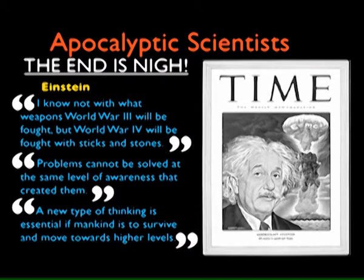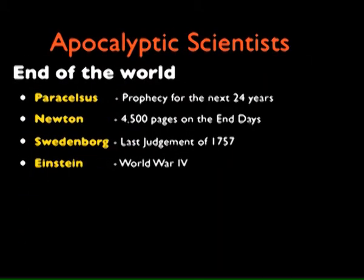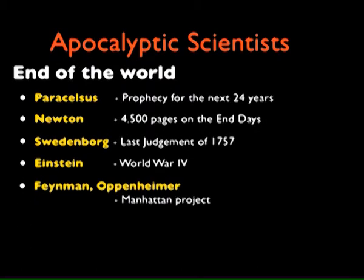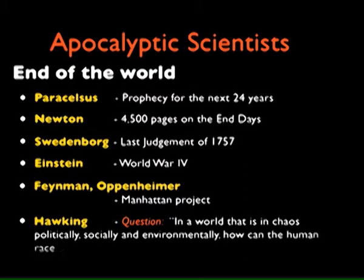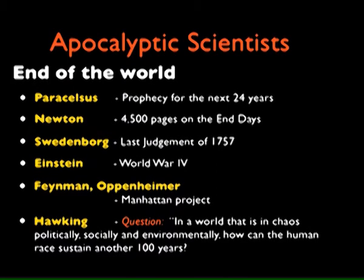Feynman and Oppenheimer worked on the Manhattan Project. Oppenheimer died a nervous wreck, totally worried about having brought a nuclear weapon into the world that he thought would be the end for all of us. Feynman too. And Stephen Hawking posted on Yahoo Answers: 'In a world that is in chaos politically, socially, environmentally, how can the human race sustain another 100 years?' His answer about a month later was: 'I don't know.'